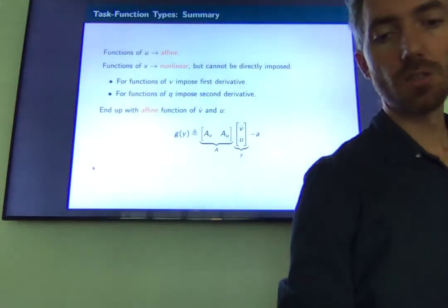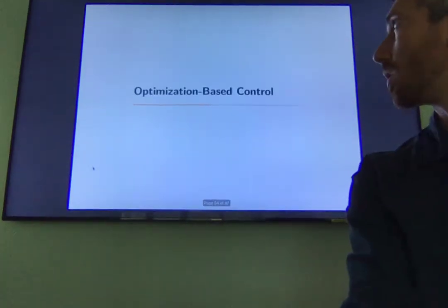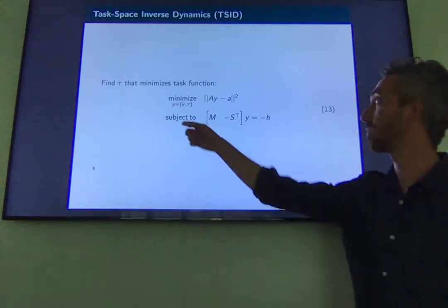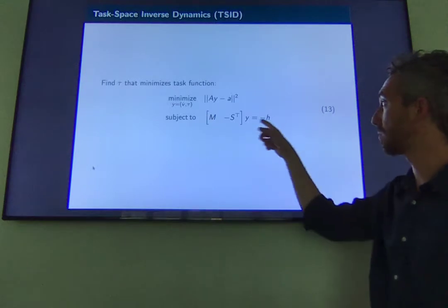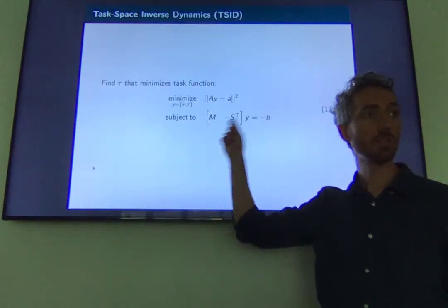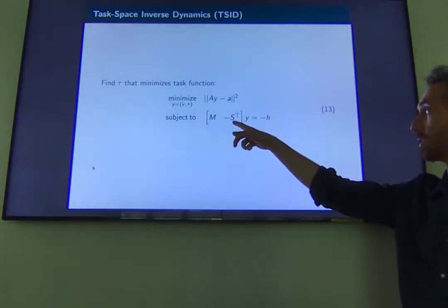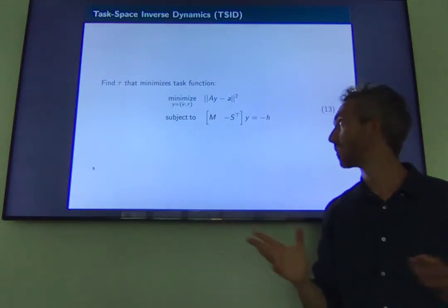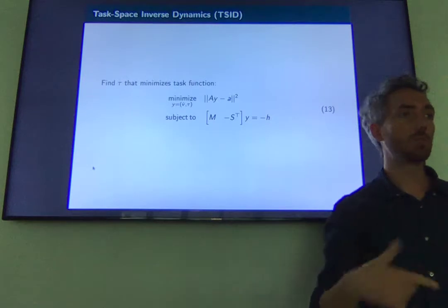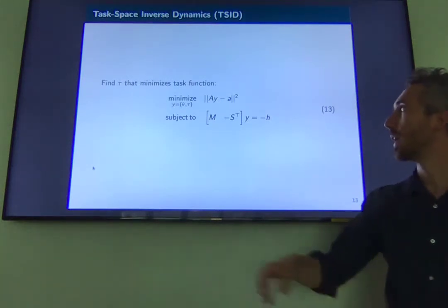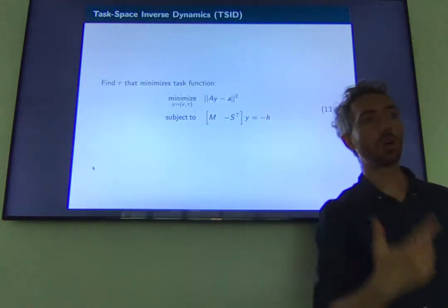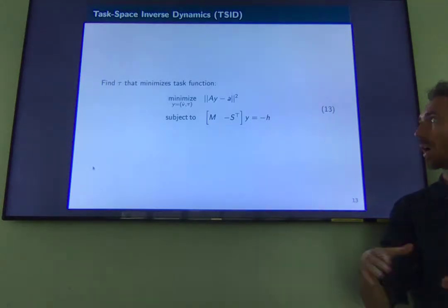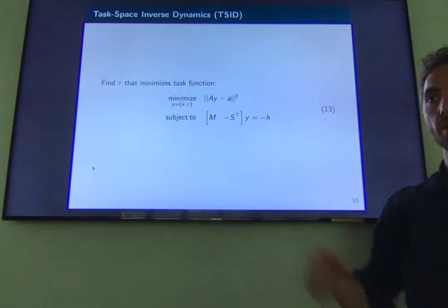The optimization problem always has the same form: variables v-dot and tau, with the system dynamics as constraints — written here for an underactuated system with a selection matrix S instead of the identity. Instead of a joint acceleration tracking error as in joint space control, we have this abstract generic linear function A·y minus a. Let's now extend this to the case where the system is in contact, since we've discussed modeling with contacts but set it aside for control. Since the final goal is locomotion, contact plays a crucial role.